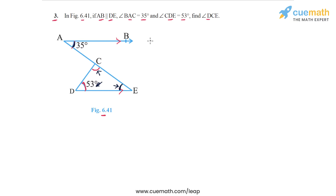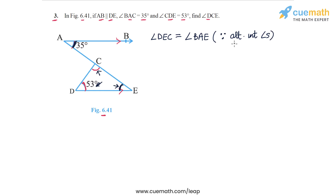Angle DEC is equal to angle BAE because these two angles are a pair of alternate interior angles, with AB and DE as the parallel lines and AE as the transversal. The transversal is segment AE, and the alternate interior angles DEC and BAE are created by it.